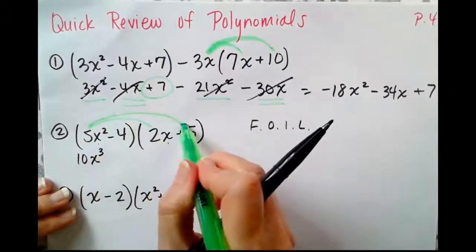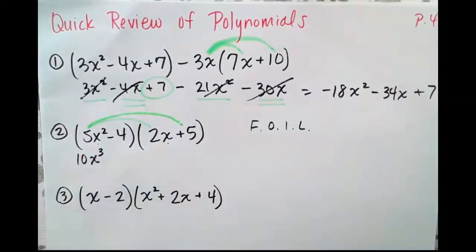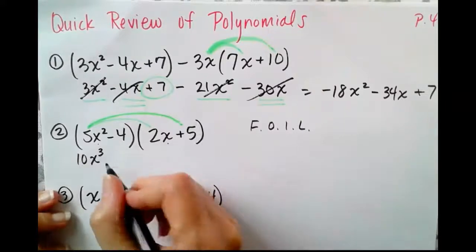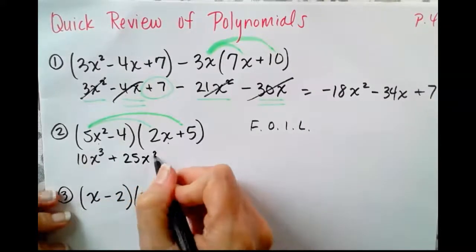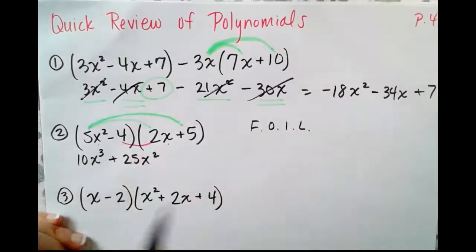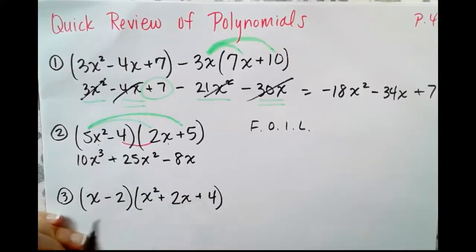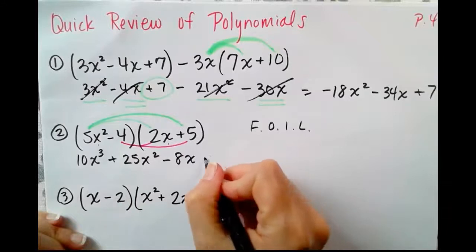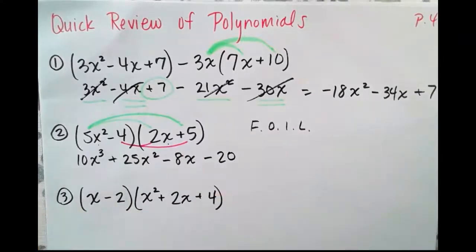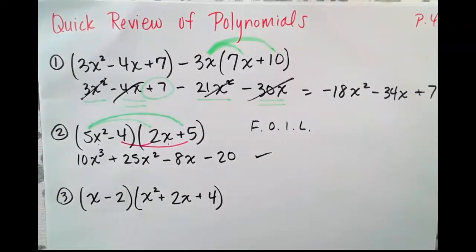Remember, we're multiplying. We're going to add those exponents when the bases are the same. Outer sides, those are the two on the outside. 5x squared times 5 plus 25x squared. Now, we're going to do the insides, negative 4 times 2x, negative 8x. And then last sides, negative 4 times 5 is negative 20. There are no like terms in this particular simplification. That is our answer.